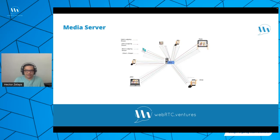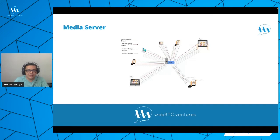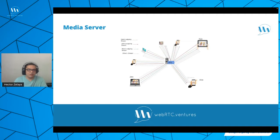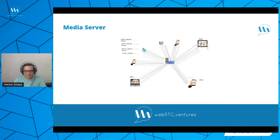A media server is where you delegate the function of routing media streams to all the other peers, and can even add recordings, transcode, or manipulate streams. There are a couple of approaches: SFU, where all clients send streams to the media server and the server routes them to each client, who handles multiple connections; and MCU, where all clients send their streams and the media server mixes them into a unique stream sent back to clients. A media server is basically an instance where you install specific software that provides that media server capability.